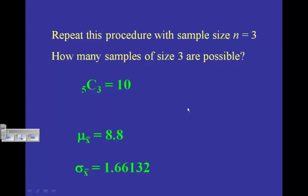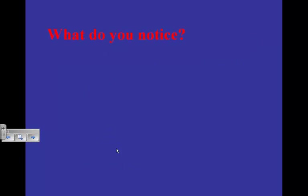The thing that changed was the standard deviation — it got smaller the bigger the samples. With the population the standard deviation was 2.9; with a sample size of 2, the sampling distribution's standard deviation was 2.2; and now with n equals 3, it's 1.66. So it's getting smaller each time.